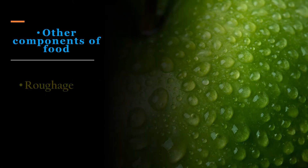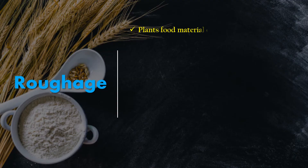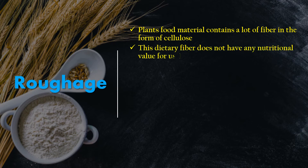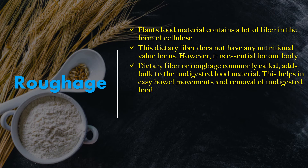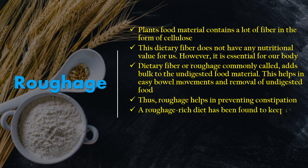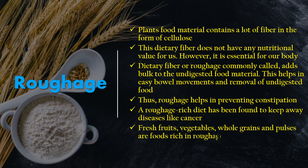Other components of food are roughage and water. Plant food material contains a lot of fiber in the form of cellulose. This dietary fiber does not have nutritional value for us; however, it is essential for our body. Roughage adds bulk to undigested food material, helping in easy bowel movements and removal of undigested food, thus preventing constipation. A roughage-rich diet helps keep away diseases like cancer. Fresh fruits, vegetables, whole grains, and pulses are foods rich in roughage or fiber.